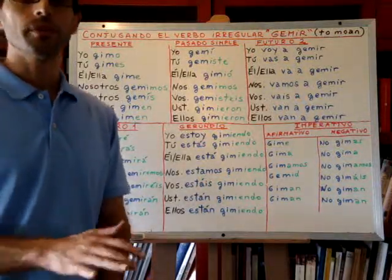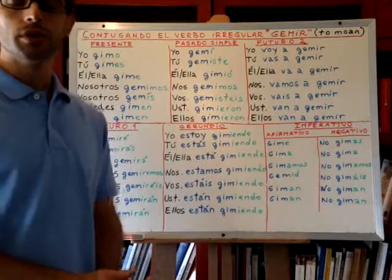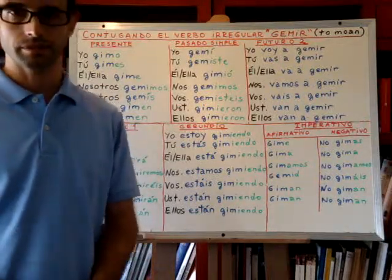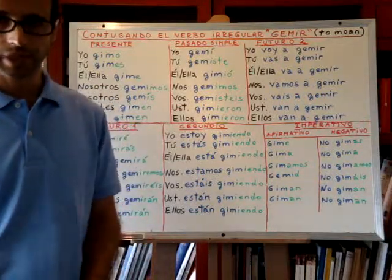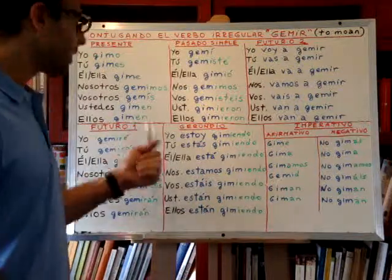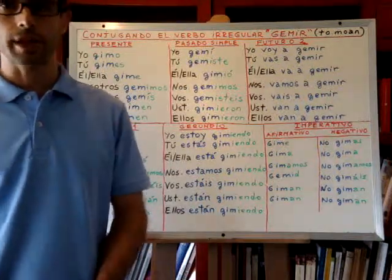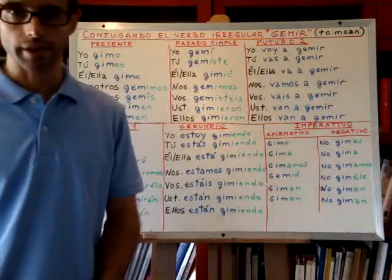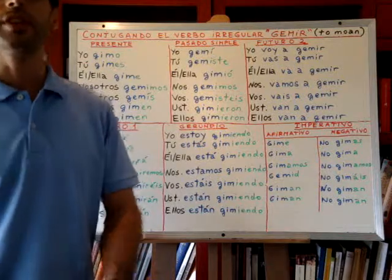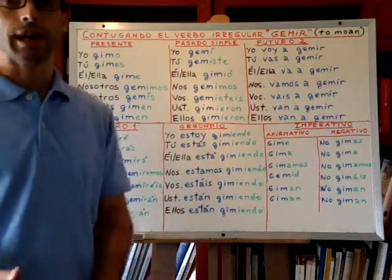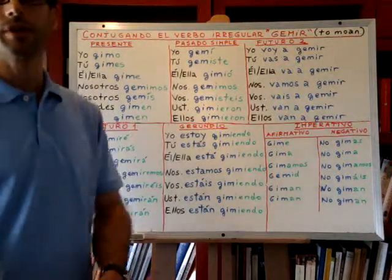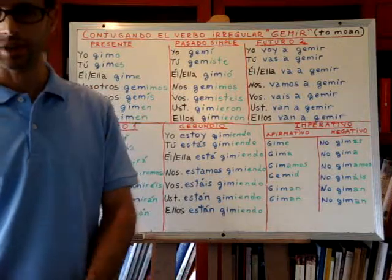For example: they moan because they hurt their leg — ellos gemen porque se lastimaron la pierna. Se lastimaron means they hurt. La pierna is the leg, or their leg.